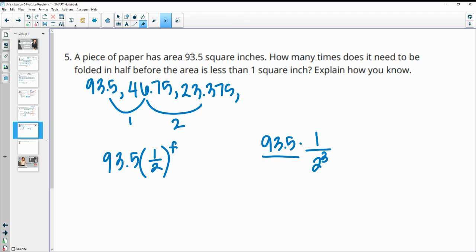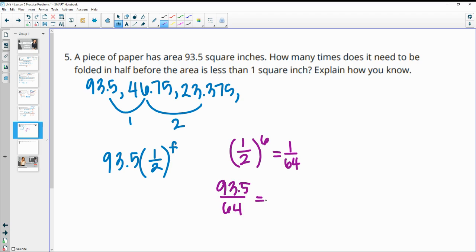So we could also think about when will that bottom number be bigger than 93.5. So if we look at 2 to the 6th power, so that's 2 times 2 six times, that's going to be 1 over 64. So then this will be 93.5 over 64, which is about 1.5 square inches left.